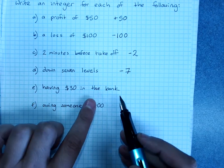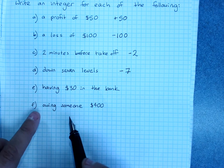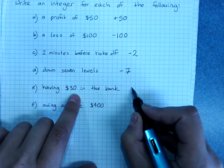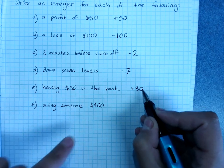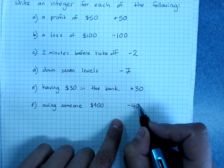Having money in the bank versus owing someone money. Owing someone money is a negative, having money is a positive. So having $30 in the bank, plus 30. Owing someone $400, minus 400.